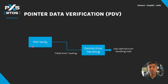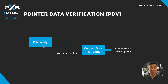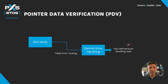The PDV verify function checks if the verification code matches the one created before. If it detects any difference, it raises an exception to the central error handling function, and user-defined handling code takes it from there. Normally, the handling code should log the issue and reset the device.